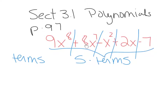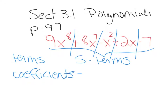The sign that is in front of the coefficient goes with that term. The next vocabulary word is coefficients. The coefficients are the numbers at the front of each term. The coefficient of the first term is 9, the second term is 8. The third term has an invisible 1, so the coefficient is negative 1. The coefficient of the fourth term is 2, and the last term is negative 7.